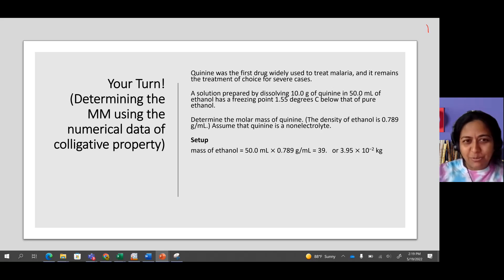Let's get back to the problem. A solution prepared by dissolving 10.0 grams of quinine in 50.0 milliliters of ethanol has a freezing point 1.55 degrees Celsius below that of pure ethanol.